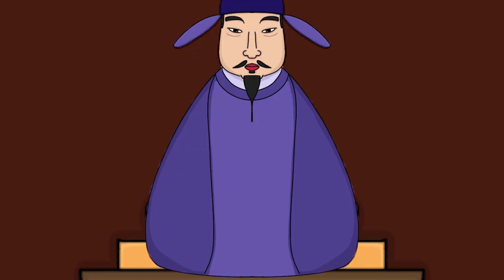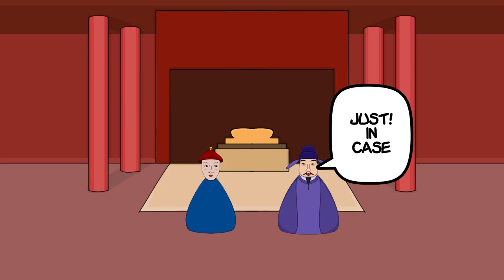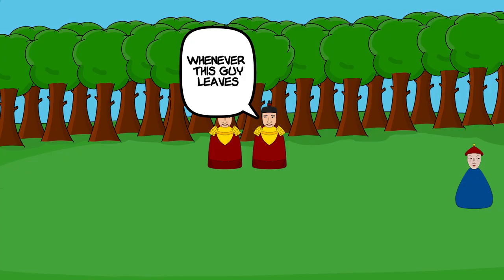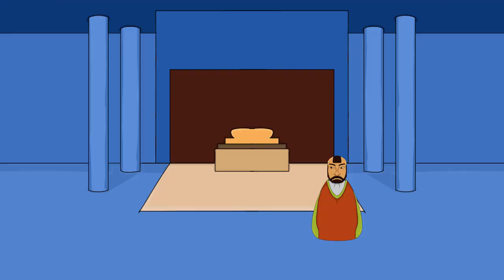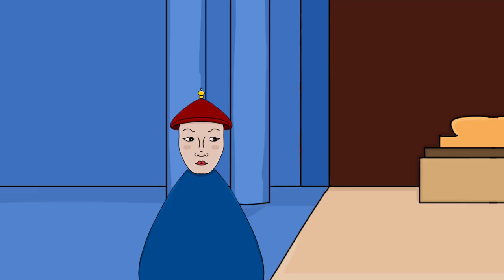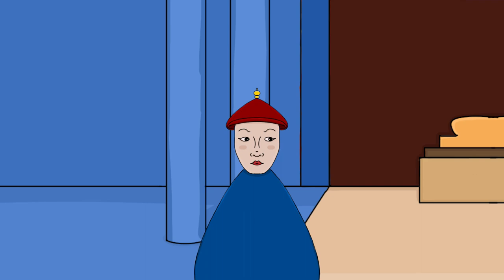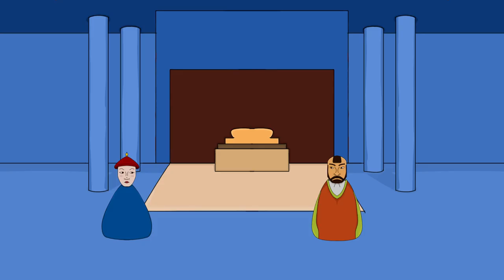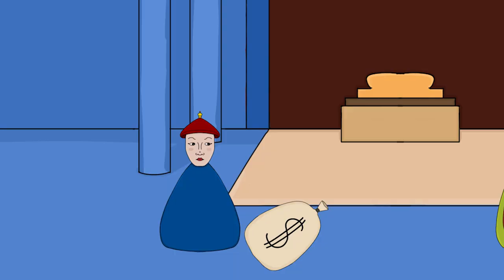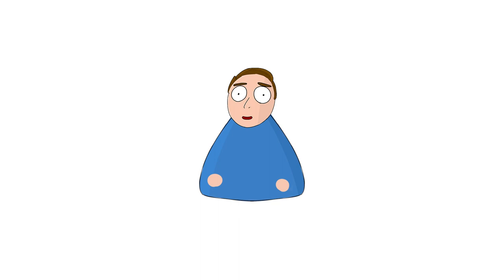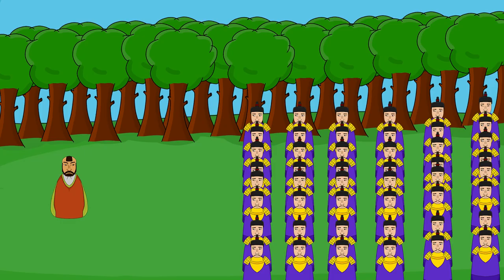At first, the emperor ignored all the pleas. But finally, he caved in and sent a eunuch to check what was really happening in the north. You're clearly building up the army for rebellion. What do you have to say for yourself? Understandable. Have a nice day. Because of this, it took the emperor a couple more years to understand what was truly happening. But by that time, An Lushan's preparations were complete. He commenced with his rebellion.